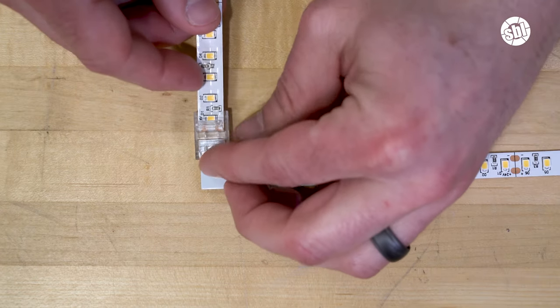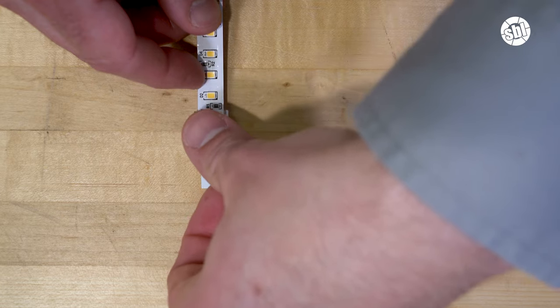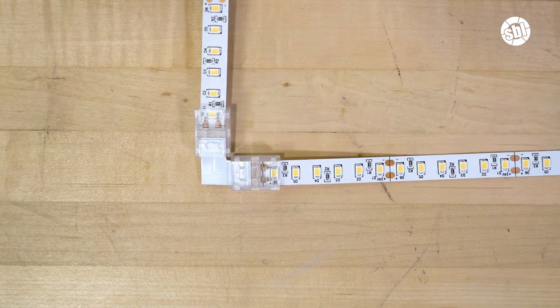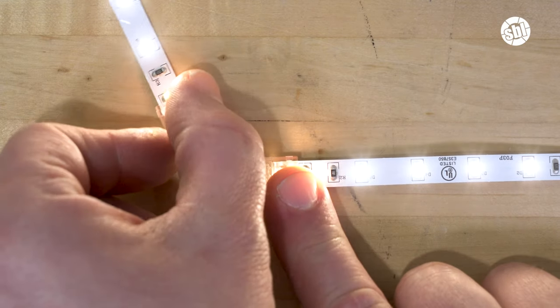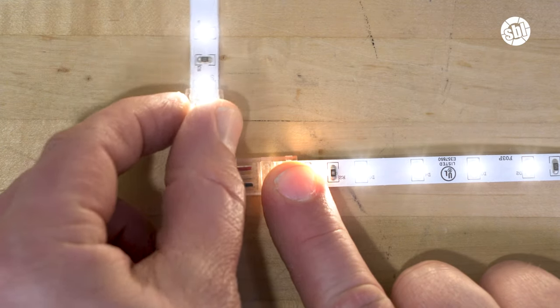These are available in a few different styles, including this connector that uses a white polycarbonate connector for a 90 degree angle. There is also this L wire connector which is flexible and perfect for corners that may be wider than 90 degrees.